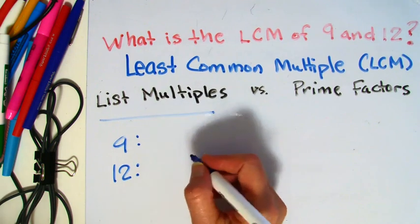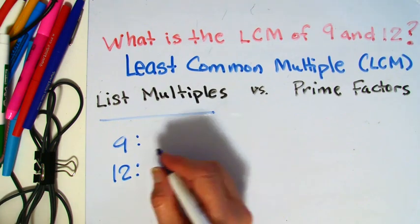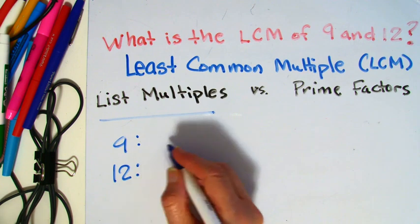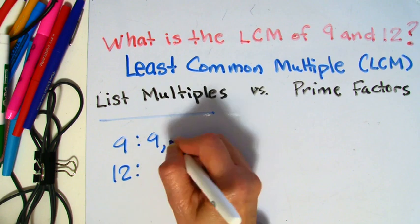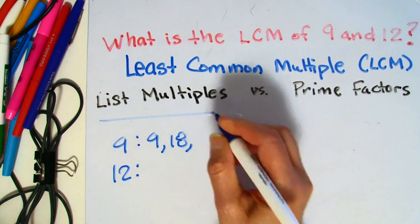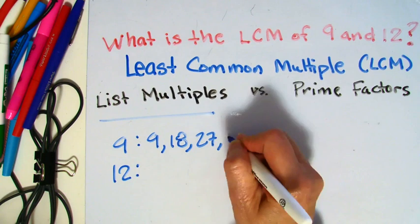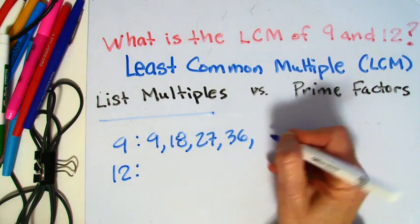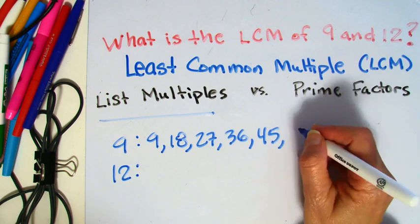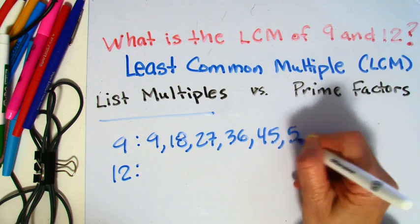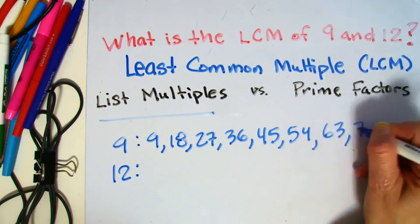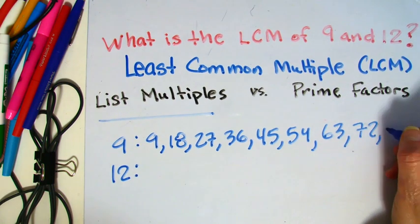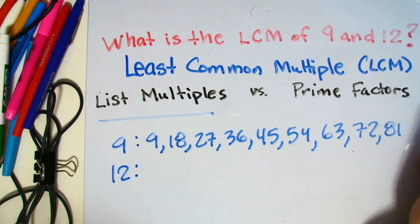Now, if you know your multiplication facts pretty well, you get to a point where you don't have to write them out. So I'm just going to go ahead and list 9, 18, 27, 36, 45, 54, 63, 72, 81, and so on.